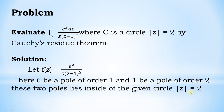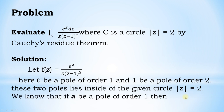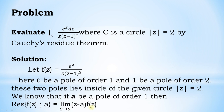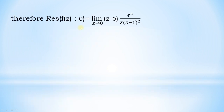So now find the corresponding residues. We know if a is a pole of order 1, then the residue of f of z at a equals the limit as z tends to a of (z − a)·f(z). Therefore, the residue of f(z) at 0 equals the limit as z tends to 0 of z·(e^z divided by z(z−1)²).